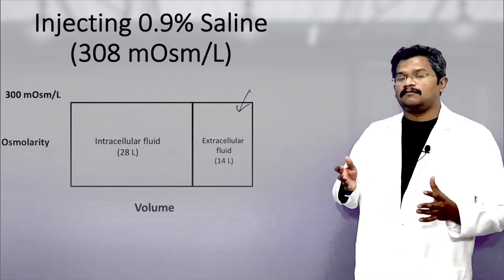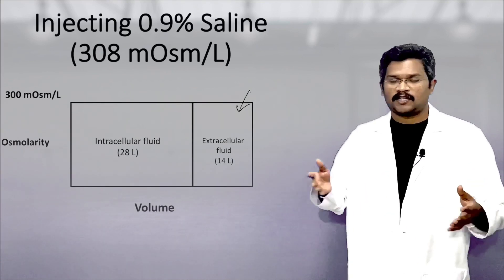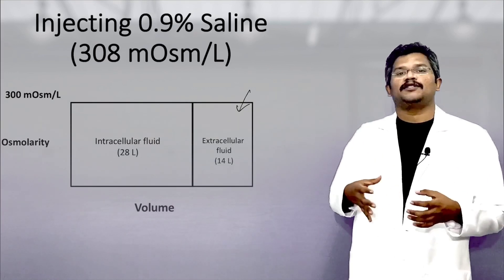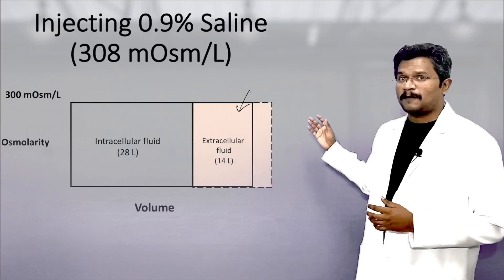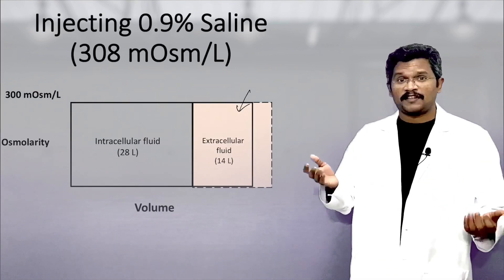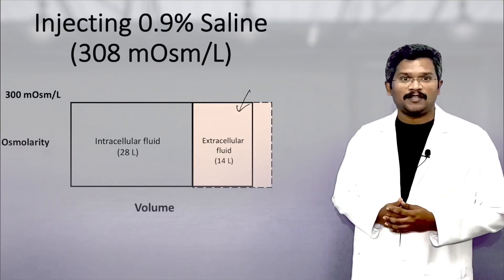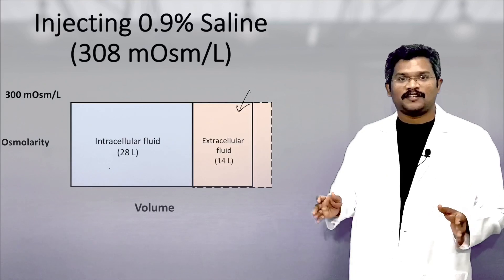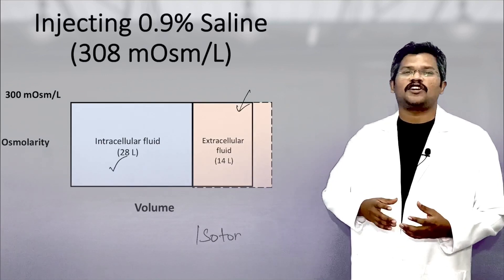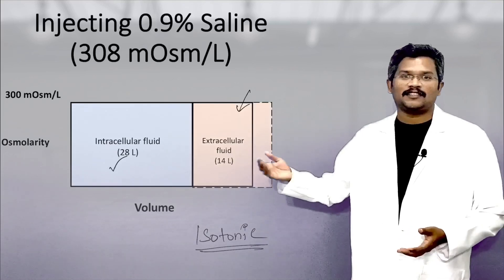If we add a few liters of 0.9% saline into the extracellular fluid, the volume of the ECF is going to expand because we are adding fluid. But the osmolarity is not going to change because we are adding a solution of the same osmolarity. So the volume expands and the osmolarity remains the same. Since there is no osmolarity difference between the two compartments, water will not move between them, and the intracellular compartment remains untouched. Such solutions are called isotonic solutions — a solution which does not alter the shape or volume of the cell.